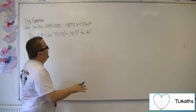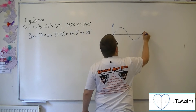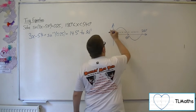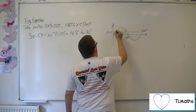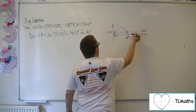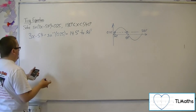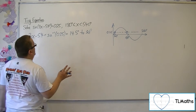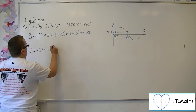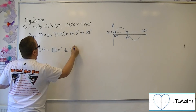Then we sketch the sine curve. I'm going to sketch it between 0 and 360 because I want to find the two principal values. I found one of them — that's the 14.5 degrees. This one is 14.5 degrees away from the 180, so 180 take away 14.5 gets me to 166 degrees to 3 sig fig. So that is my second principal value: 166 degrees.